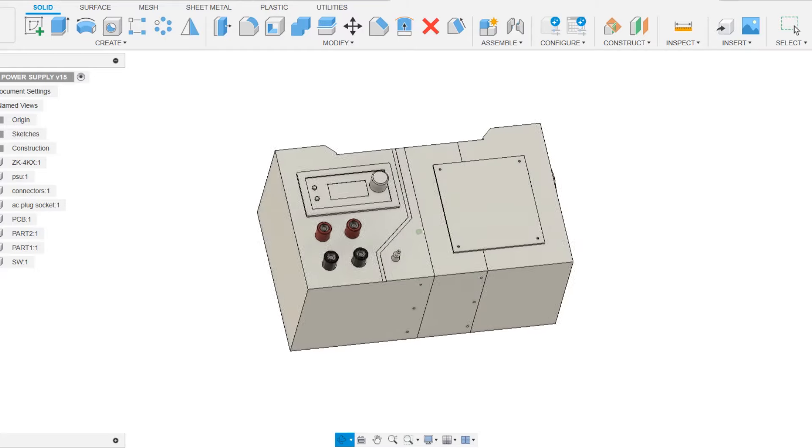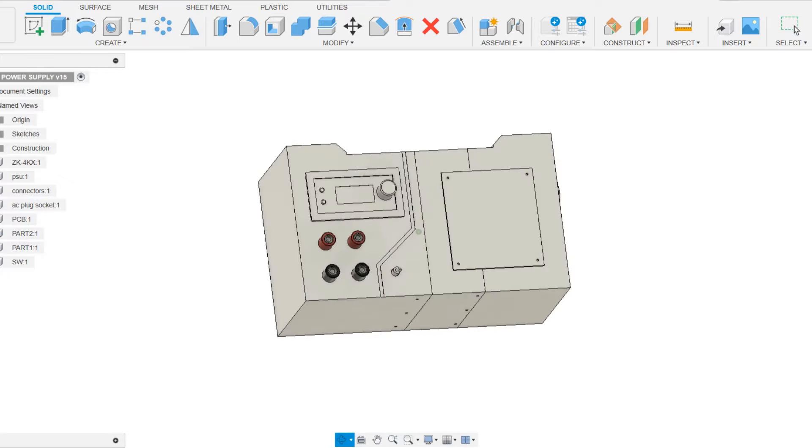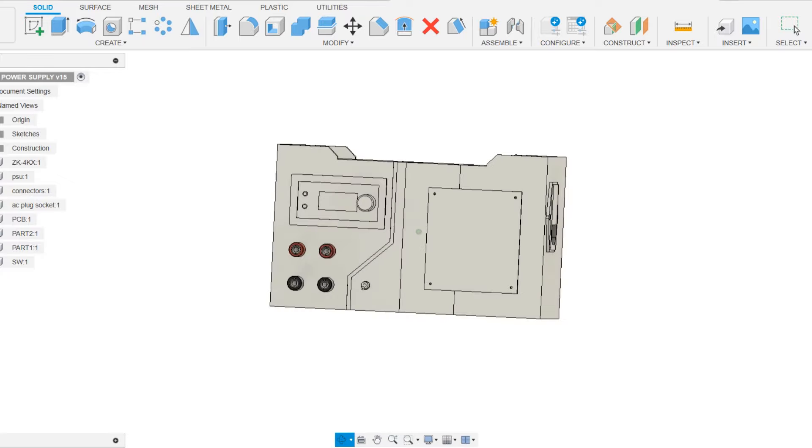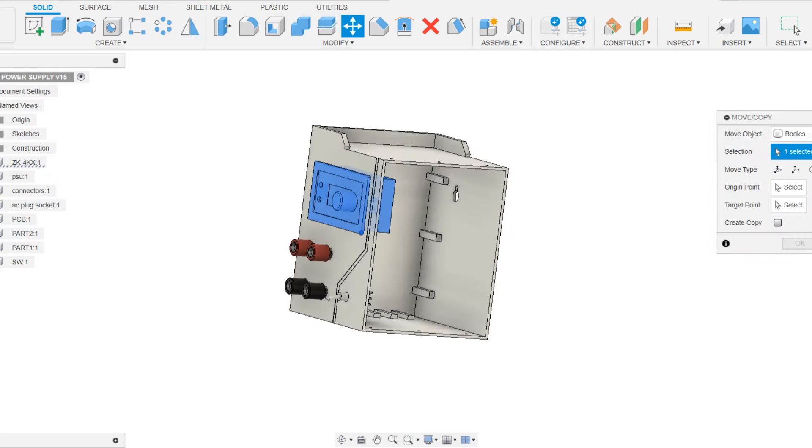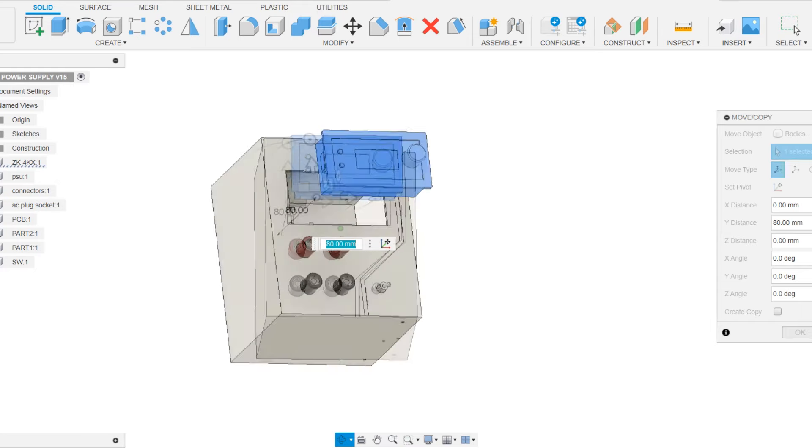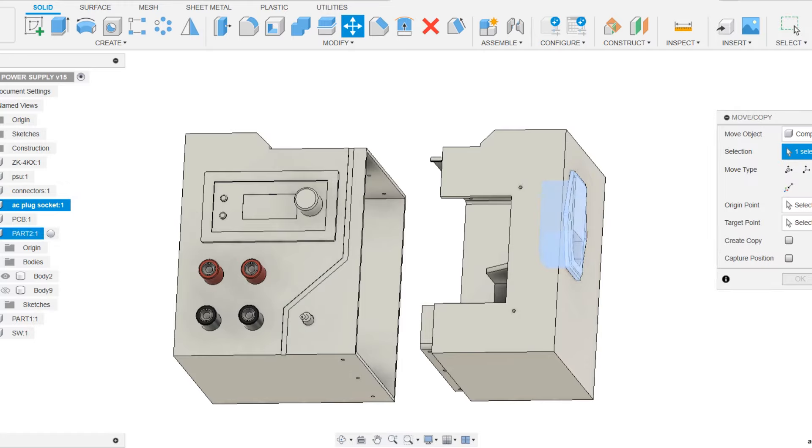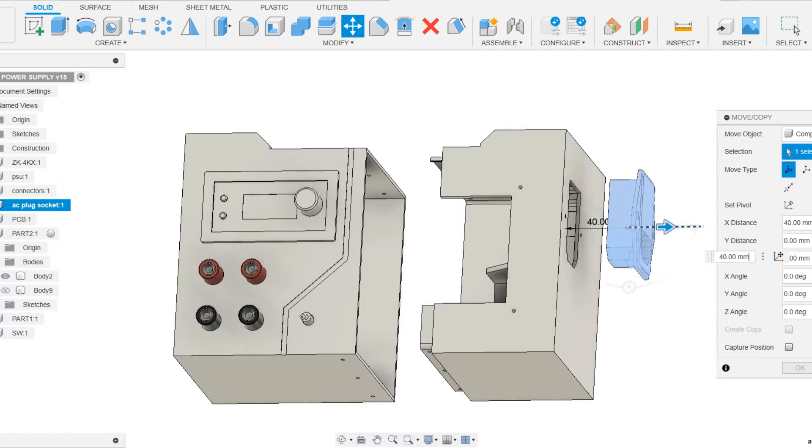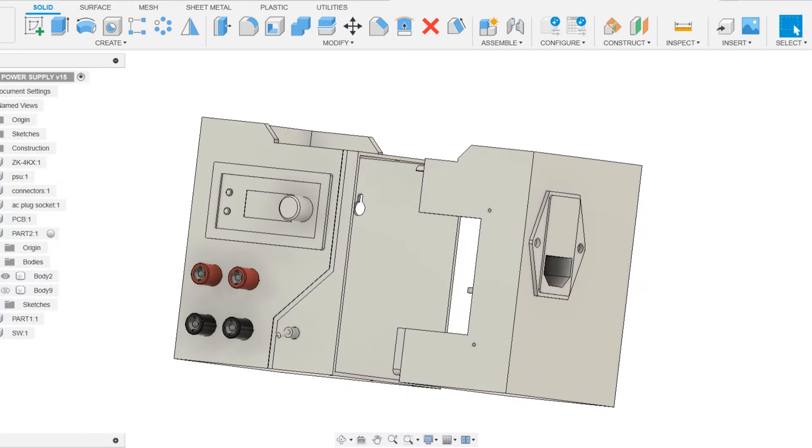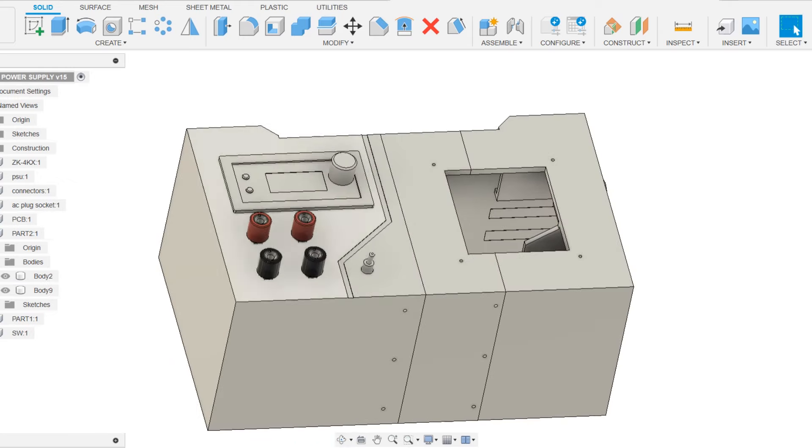The primary body of the bench power supply is composed of three main sections that are connected to create a single cohesive body. The ZK4KX converter module and four female banana pin sockets are added to the output section, which also has a knob switch on the front side. Then there's the power in section which houses the power inlet socket. Also connected between the output section and the power in section, we have a middle section that combines both of these parts together.